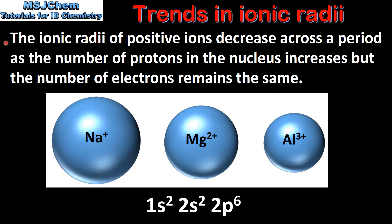Next we'll look at the trend in ionic radii across a period. The ionic radii of positive ions decrease across a period as the number of protons in the nucleus increases but the number of electrons remains the same. Here we have a sodium ion, a magnesium ion and an aluminium ion. As we go across a period from left to right the ionic radii decrease, because the number of protons in the nucleus increases.